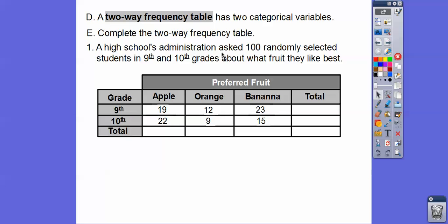Right here it says a high school's administration asked 100 students. So this is going to be 100 down here. This is going to be the grand total right here. So it just depends on how you want to do it. I think I did this first column first. Yep, 19 plus 22 is 41. Then 12 plus 9 is 21. And then 23 plus 15 is 38.